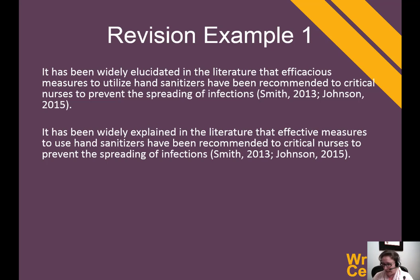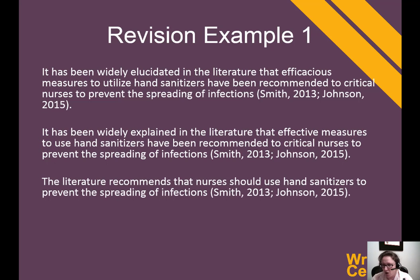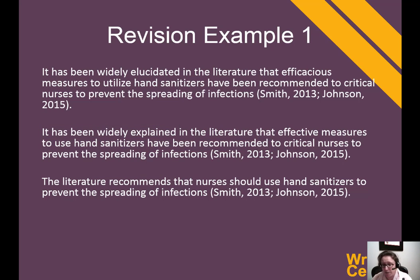If you notice, at the end of the sentence there's a lot of 'to' and 'to' and 'to' — so the sentence structure is still a little confusing and still very long. Let's see if we can take some extra words out. Rather than saying 'it has been widely explained in the literature,' I'm going to go much more directly — 'The literature recommends' — because that's really what it's saying. Come right out of the bat, shorten the sentence significantly.